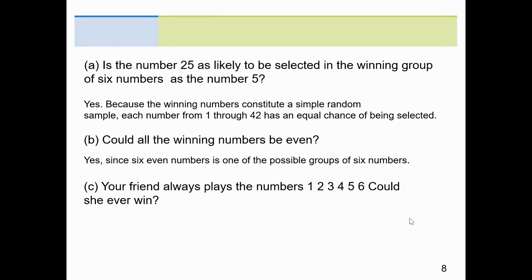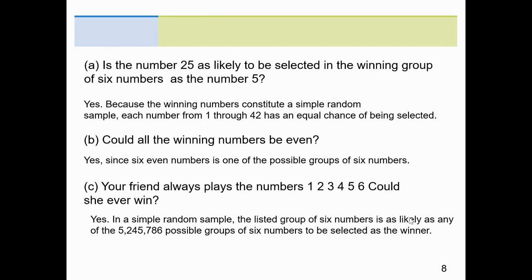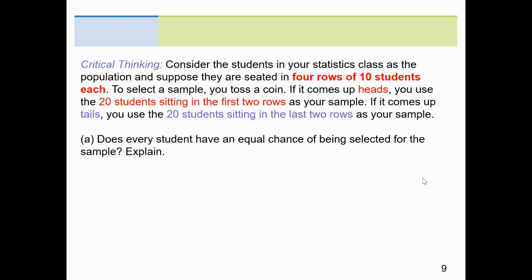Your friend always plays 1, 2, 3, 4, 5, 6. Could she have a win? Well, why not? It's just as likely as any other six-number combination, right? Listed numbers, six numbers is as likely as any other. He tells us there's 5,245,786 possible six-number groups. We'll actually be able to figure that out when we do chapter 4. 1, 2, 3, 4, 5, 6 has an equal chance of coming out as any other six numbers. Simple random sample.